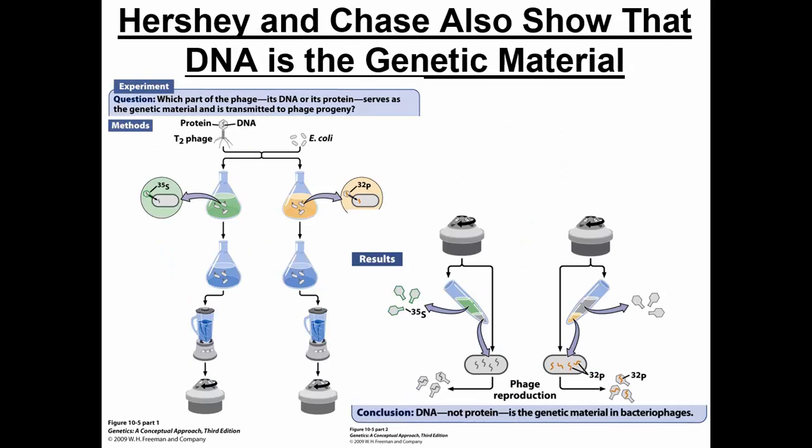A second experiment also showed that DNA is the genetic material, and this was conducted by Hershey and Chase. In this one, you want to basically show how two different types of radioactivity — S35 and P32 — were used to label proteins and DNA respectively, and how this showed that DNA was the genetic material. Again, an experiment you want to be able to walk someone through.